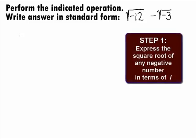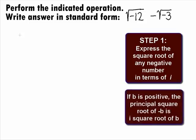In Step 1, we want to express the square root of any negative number in terms of i. We can use the principal square root of a negative number to help us do this. It states that if b is a positive real number, then the square root of negative b is equal to i square root of b. This uses the fact that the square root of negative 1 is i.